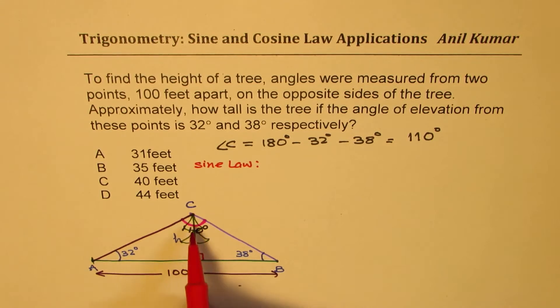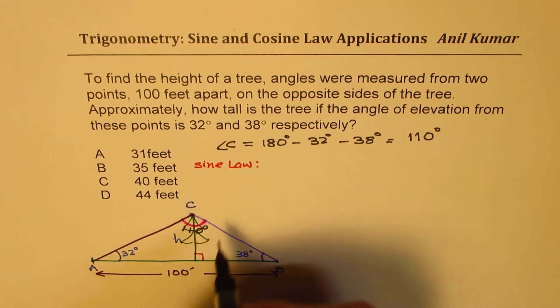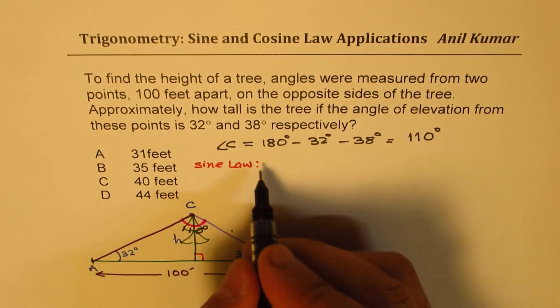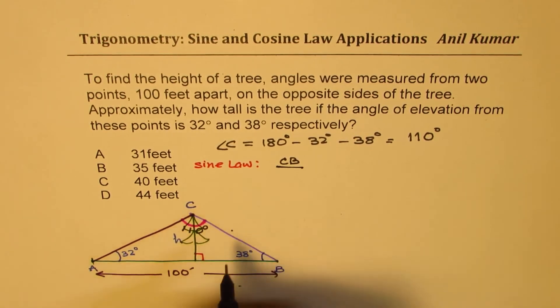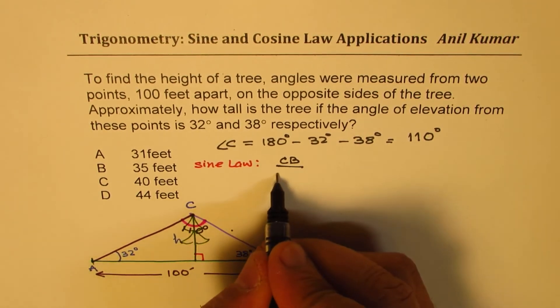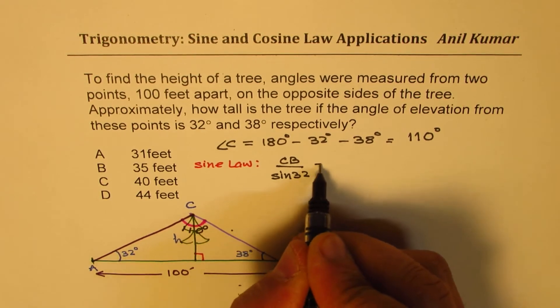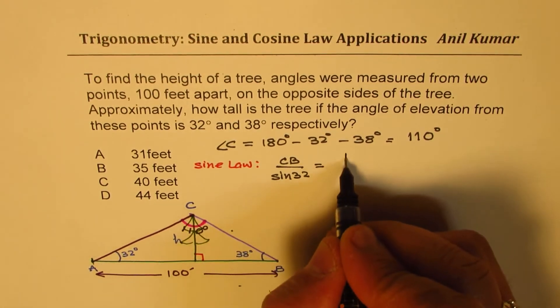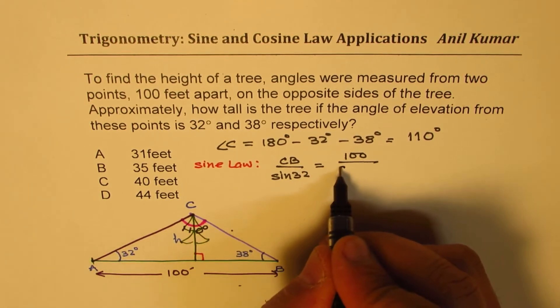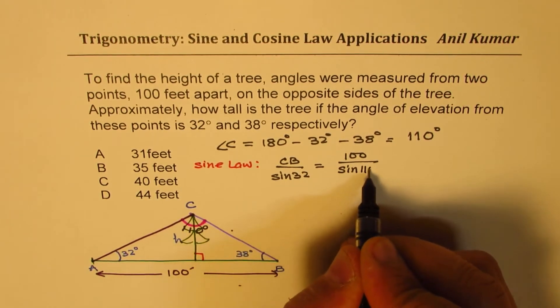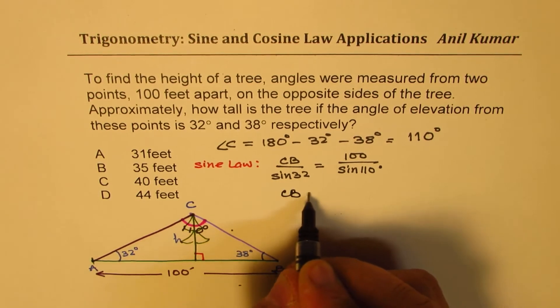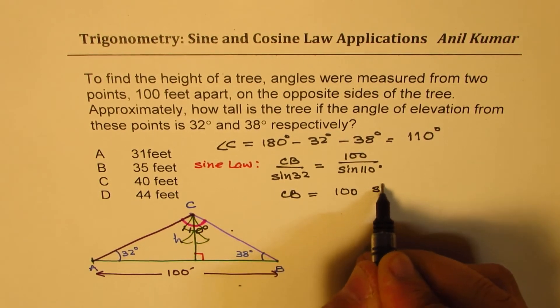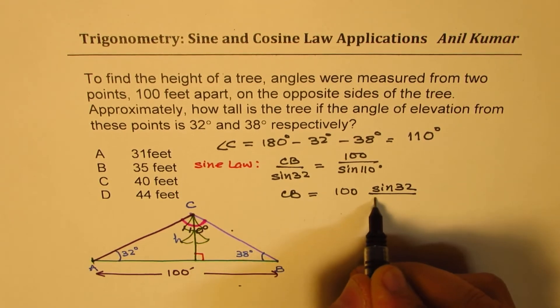Since we have this combination angle and opposite side, we should find one of these sides. So let's figure out what is CB. So we can say CB over sine of 32 should be equal to 100 over sine of 110. So CB is equal to 100 times sine of 32 divided by sine of 110 degrees.